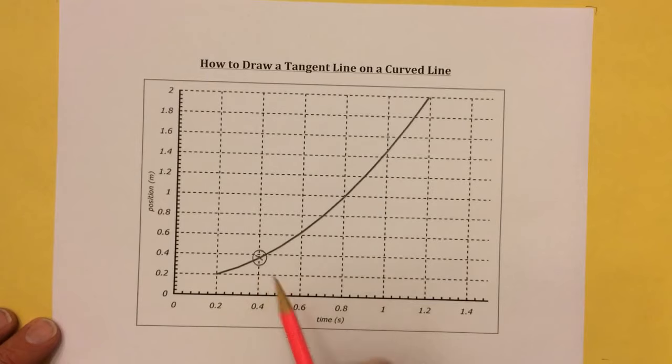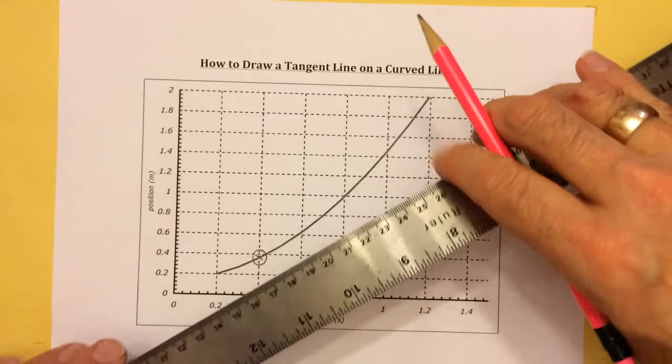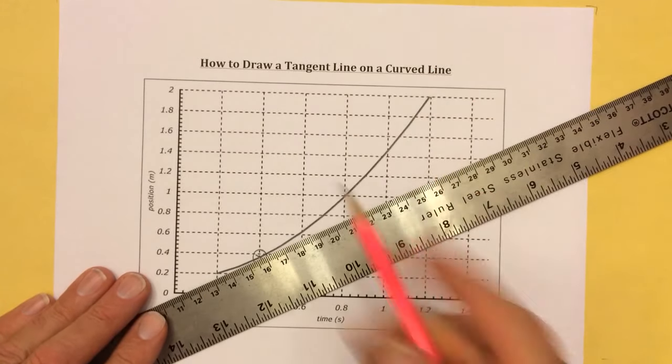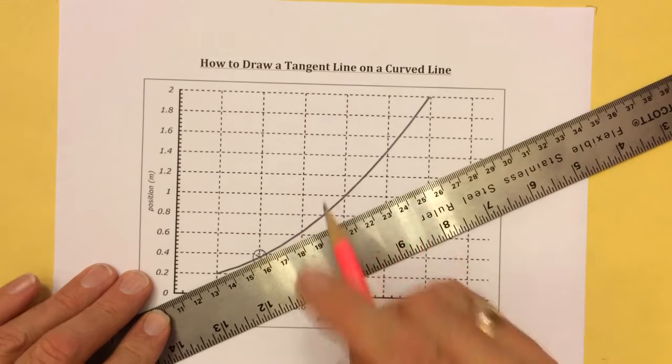And what I want to do is I want to draw a tangent line right at that point. So I'm going to take a long ruler and I'm going to bring it up to the line and I'm going to try to draw a straight line such that it only touches that point.